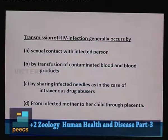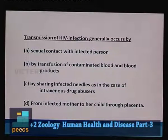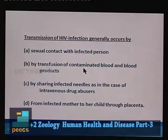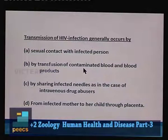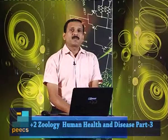HIV is transmitted by four different ways: first, by sexual contact with an infected person; second, by transfusion of contaminated blood and blood products; third, by sharing infected needles as in the case of intravenous drug abusers; and fourth, from an infected mother to her child through the placenta. There will be both prenatal (before birth) and postnatal (after birth) transfer of HIV from mother to child.